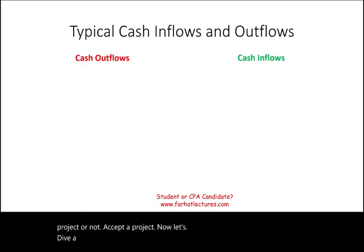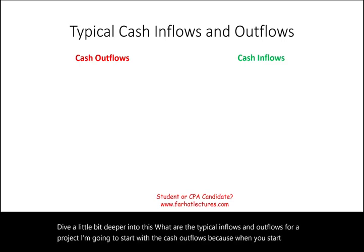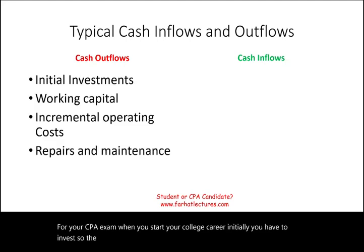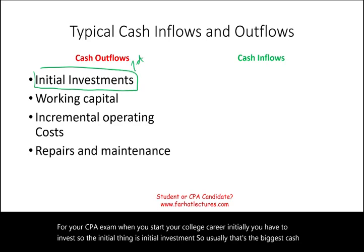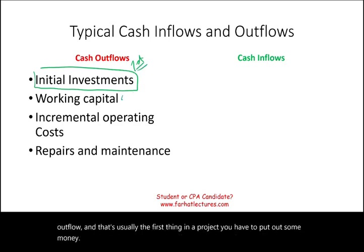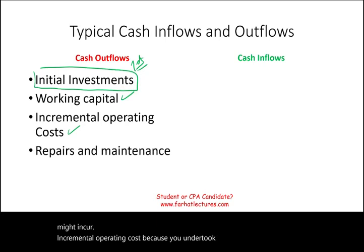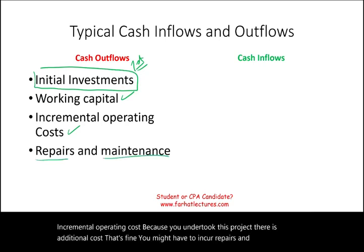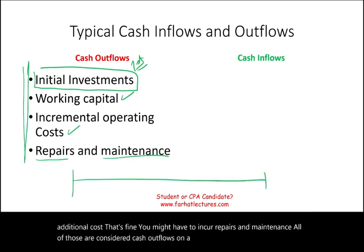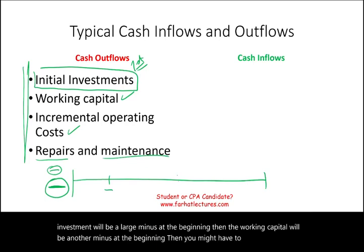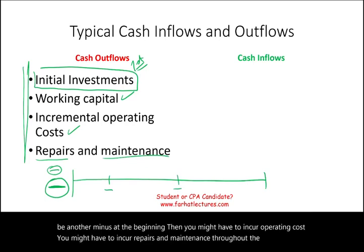Now let's dive a little deeper. What are the typical inflows and outflows for a project? Starting with cash outflows: when you start an investment, initially you have to invest — so the initial investment is usually the biggest cash outflow and typically the first thing in a project. You might also need working capital — supplies and inventory for that project — plus incremental operating costs and repairs and maintenance throughout the project.